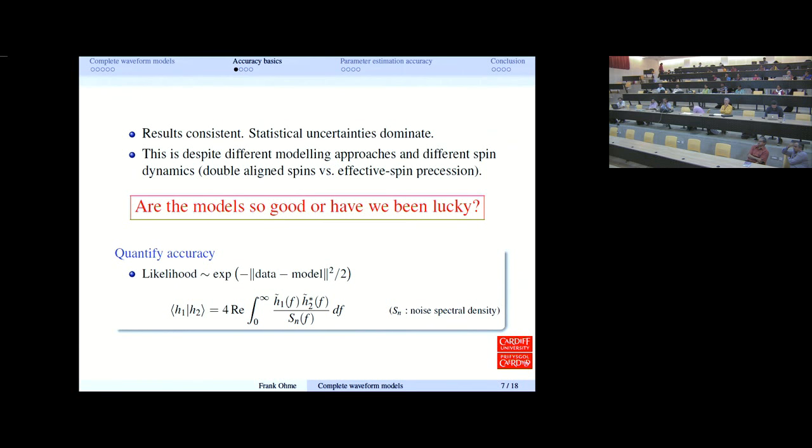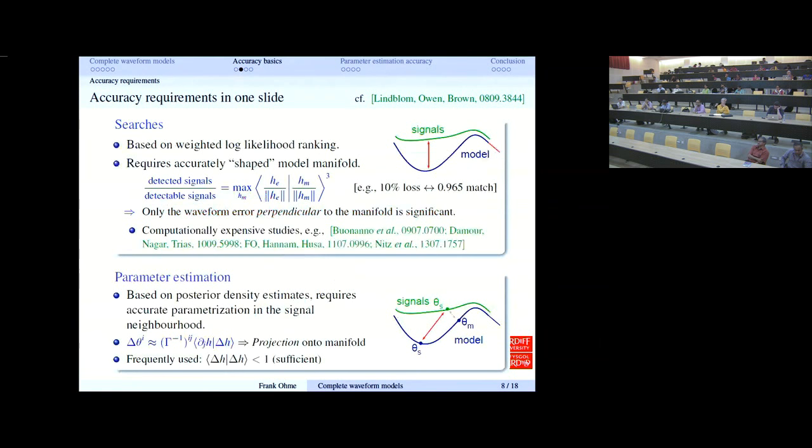On the next slide, still slide seven, the way we want to quantify how good are the models is based on the likelihood that is used both in finding gravitational wave signals and extracting parameters. This likelihood is based on an exponential of the difference of data and model waveform. This distance is based on an inner product that I'm sure most people in the audience have seen a million times, but I give it here for completeness. Sn is the noise spectral density, so we have to assume a specific instrument to make these estimates.